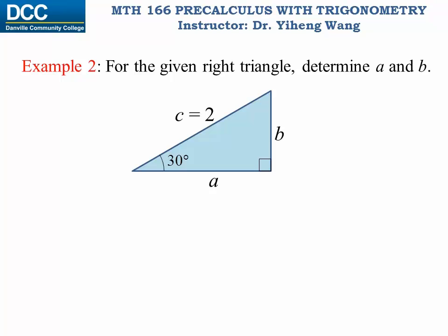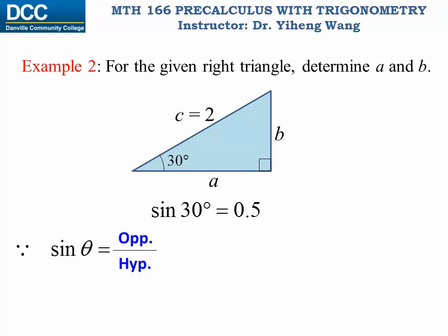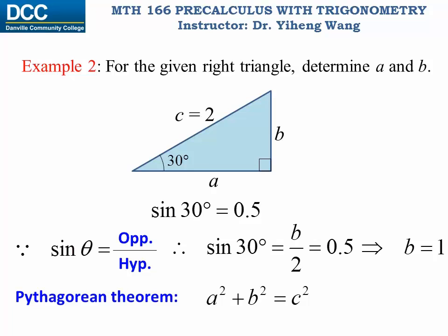Let's look at this example. For this right triangle, we know the length of the hypotenuse side to be two, and we also know the angle is 30 degrees, and we need to determine the length of the two sides A and B. Using a calculator, we can find that sine 30 degrees equals 0.5. Since by definition sine theta equals the opposite side divided by the hypotenuse side, the opposite side is B and the hypotenuse is C which is two, so B over two equals 0.5, and we can solve for B to be one. Then to determine A, we use the Pythagorean theorem again, and from here we can calculate A to be the square root of three.